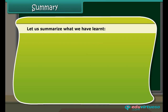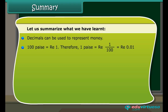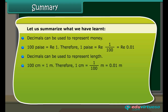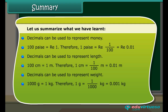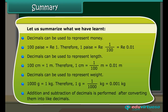Let us summarize what we have learned. Decimals can be used to represent money: 100 paise equals rupee 1, so 1 paisa equals rupee 0.01. Decimals can be used to represent length: 100 cm equals 1 metre, so 1 cm equals 0.01 metre. Decimals can be used to represent weight: 1000 grams equals 1 kilogram, so 1 gram equals 0.001 kilogram. Addition and subtraction of decimals is performed after converting them into like decimals.